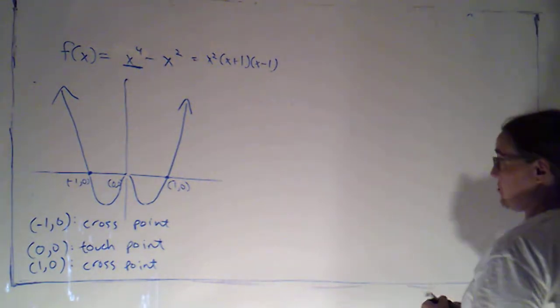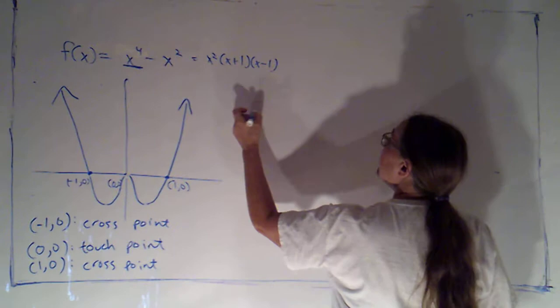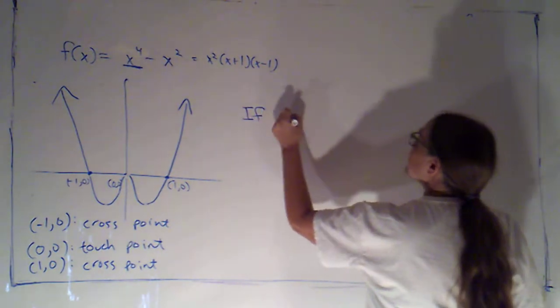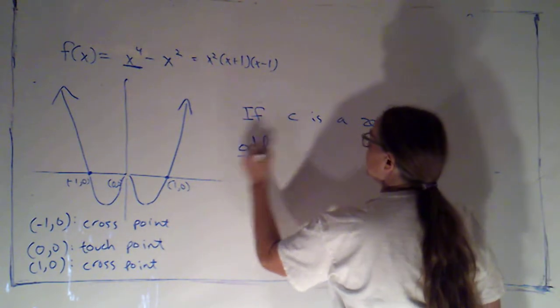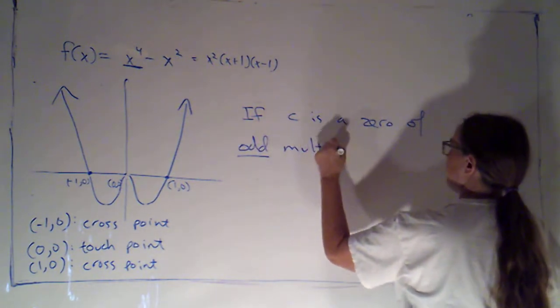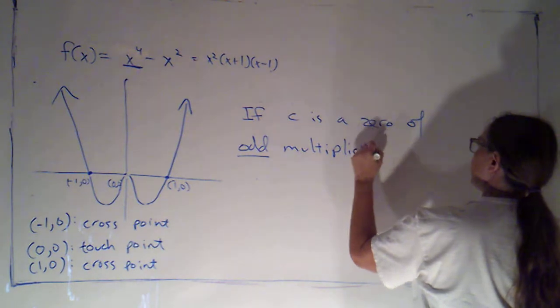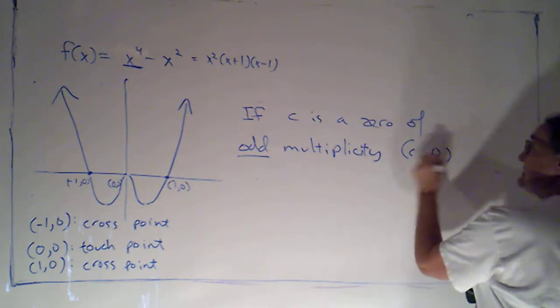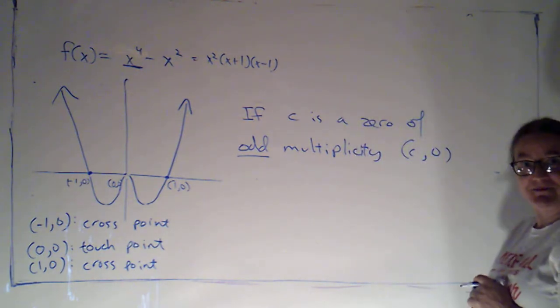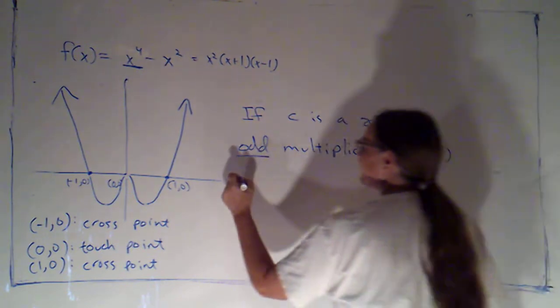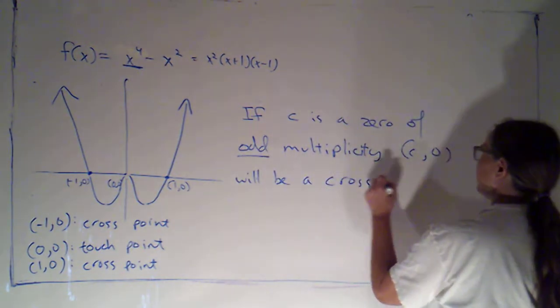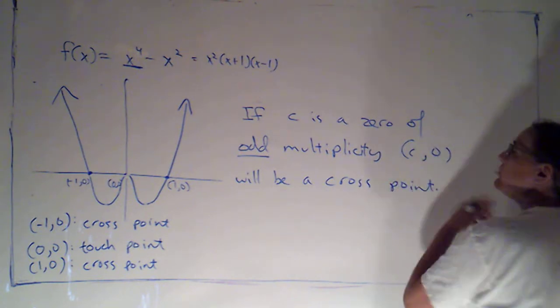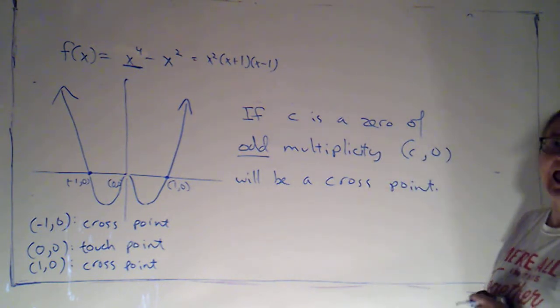So, we can say, if c is a zero of odd multiplicity, then c, 0, the x-intercept that I can associate with that, will be a cross point. We will cross the x-axis at that location.